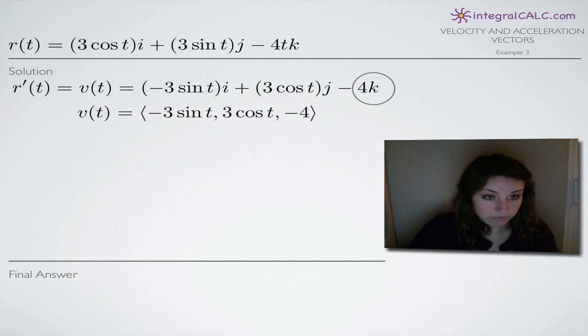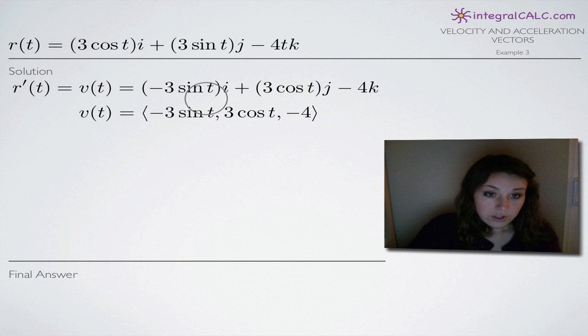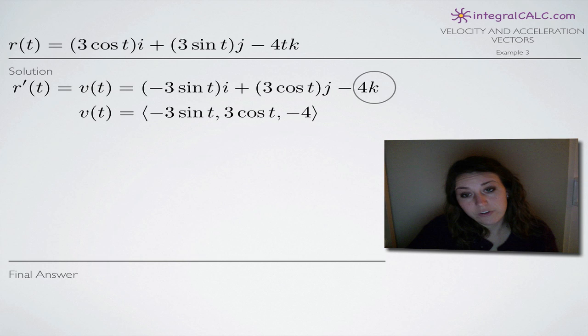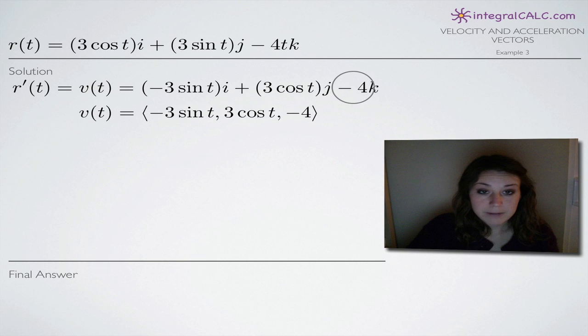And then to find the velocity vector, we take the coefficients in front of i, j, and k which are really easy to see in this problem. You can tell right away the coefficient on i is negative 3 sin t, the coefficient on j is 3 cos t, and the coefficient on k is negative 4. So all we did was grab those coefficients. Keep in mind that if you have a negative in front of one of these terms, you're going to include that sign. It's not just the 4, it's negative 4. But it's anything outside of i, j, and k we grab as the coefficient. So these are the three direction numbers that are going to make up our velocity vector.